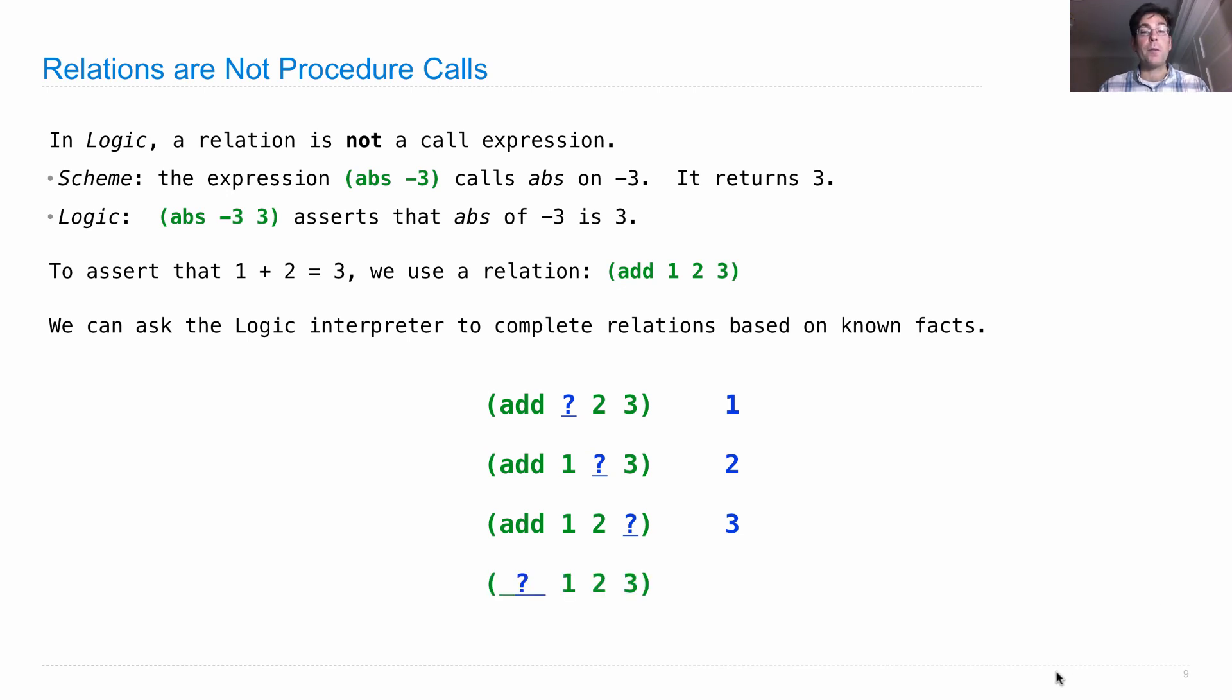It can even tell us what relations exist between three numbers. What is it that relates 1, 2, and 3? Well, one option is that the first two add to form the third. This is a different style of programming. We state relations which include both the inputs and the outputs of something you'd think of as a procedure in another language. When we have both the inputs and outputs stated all in one relation, we can ask the Logic interpreter to go either forwards or backwards, or even tell us how things are related.